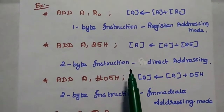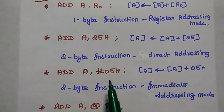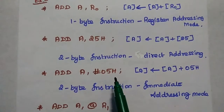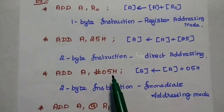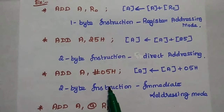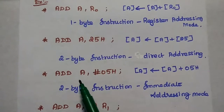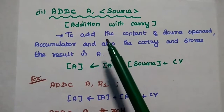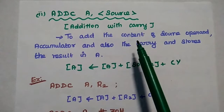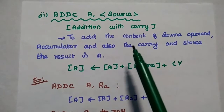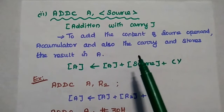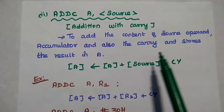ADD A, #05H is immediate addressing mode because the data is directly given in the instruction. It is a 2-byte instruction — one byte for opcode and another byte for the data. The next instruction is ADDC, that is addition with carry. The previous ADD instruction adds source and destination but not the carry; ADDC is used to add the carry as well.